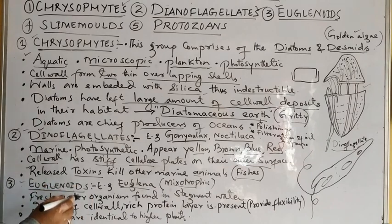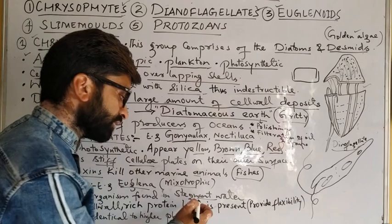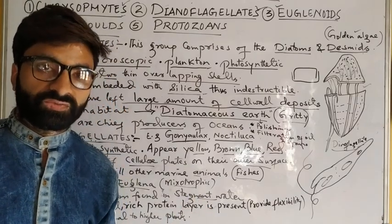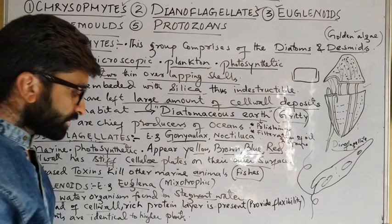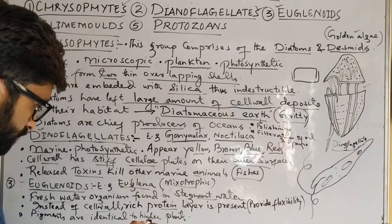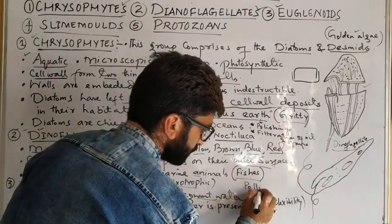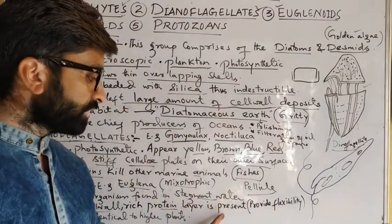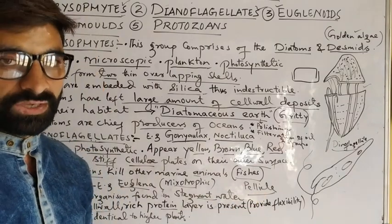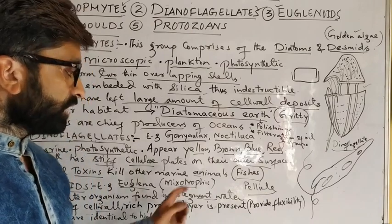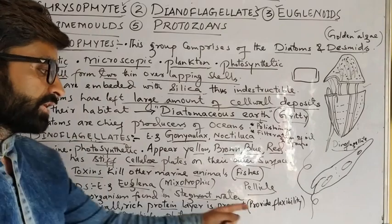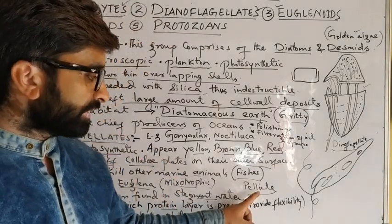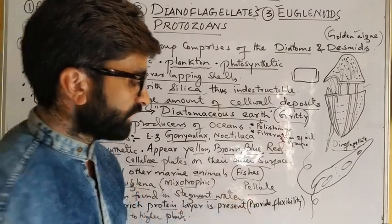Euglenoids are fresh water organisms, typically found in stagnant water. The body of Euglena is covered by a protein layer called a pellicle, which provides flexibility to the body of Euglena.